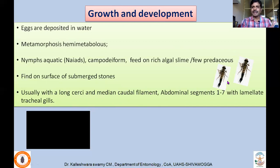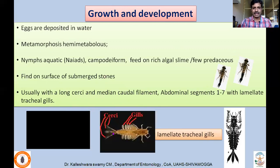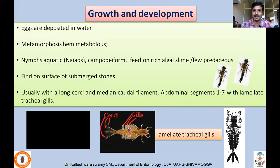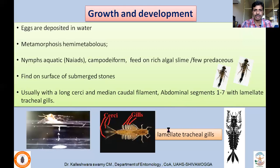Additionally, naiads act as food for other organisms in the aquatic system, such as fishes — they provide a very important ecosystem service. They are found in large numbers because a single female deposits many eggs. Naiads have cerci and also a median caudal filament. For respiration, abdominal segments 1 to 7 have lamellate tracheal gills, which help in taking up oxygen directly from the water.